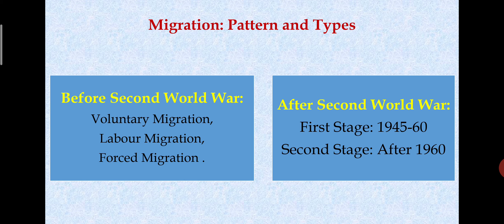Israel also saw increased immigration. Many people came to the UK, France, Australia, Brazil, and Argentina. This was the 1945-1960 period. During that time, the World War also caused major population movements. There were many Hindus, Muslims, and Sikhs displaced. There was also a migration trend in Tibet during this first stage.